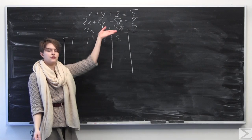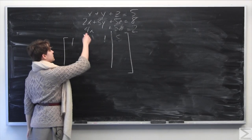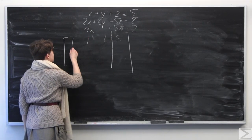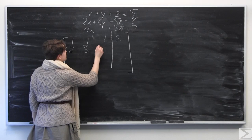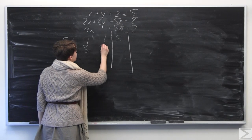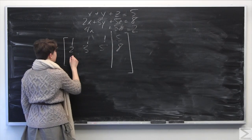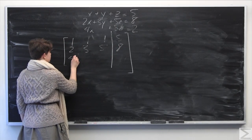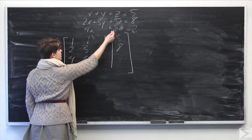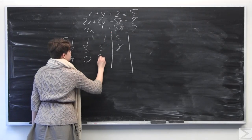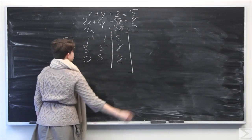We do the exact same thing with the next two equations. We take the x variable, which is two, y, which is three, z, which is five, and then the constant, which is eight. Then for the third row: x is four, there's no y so we put a zero there, z is five, and the constant is two.